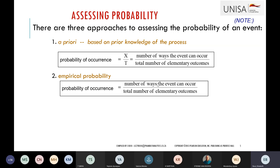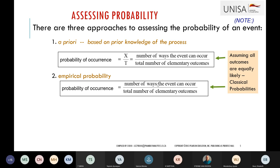We also have the empirical probability — calculating the probability of an event using the number of outcomes that satisfy the event divided by the total sample space. Both a priori and empirical probabilities are classical probabilities. We calculate them by means of simple and joint probabilities, assuming all outcomes are equally likely to happen.